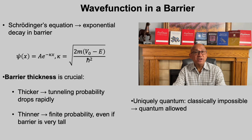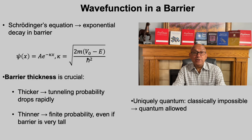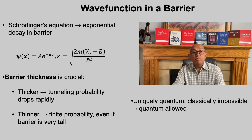When we solve Schrödinger's equation inside a barrier, the wave function does not vanish — it decays exponentially. The decay constant depends on the mass of the particle and how high the barrier is compared to its energy. The most striking point is this: the thickness of the barrier matters even more than its height. If the barrier is very thick, the wave function decays almost completely and tunneling is negligible. But if the barrier is thin — only a few nanometers — there is always a finite chance the particle will appear on the other side, even if the barrier is very tall. In classical mechanics, too tall is absolute — the particle cannot pass. In quantum mechanics, thickness opens the door, making the impossible possible.